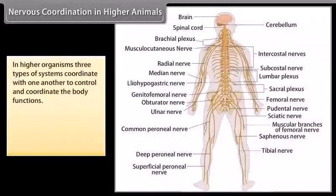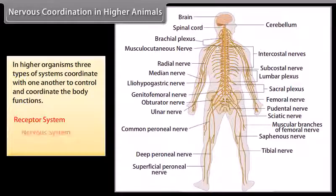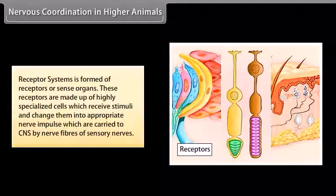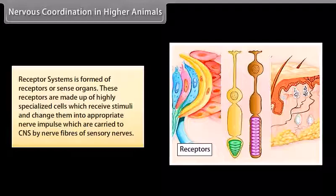In higher organisms, three types of systems coordinate with one another to control and coordinate the body functions. They are: receptor systems, nervous system, and effector system. Receptor system is formed of receptors or sense organs. These receptors are made up of highly specialized cells which receive stimuli and change them into appropriate nerve impulses, which are carried to the CNS by nerve fibers of sensory nerves. Receptors are of six main types.